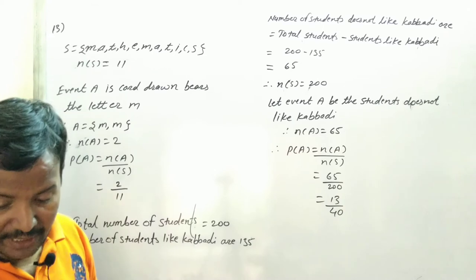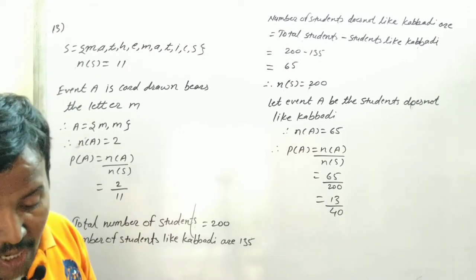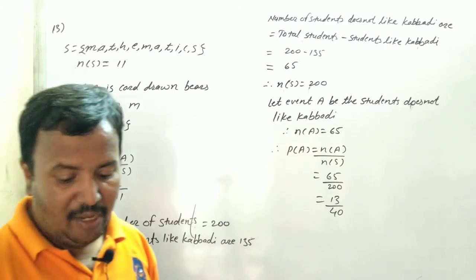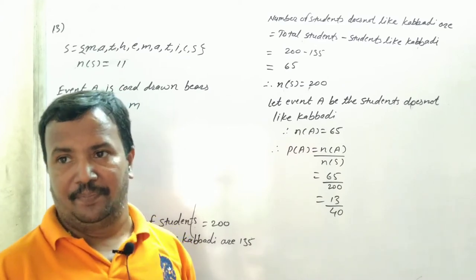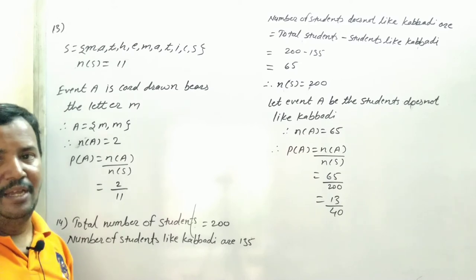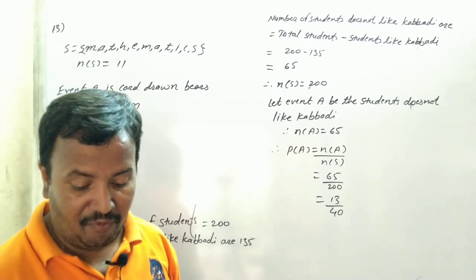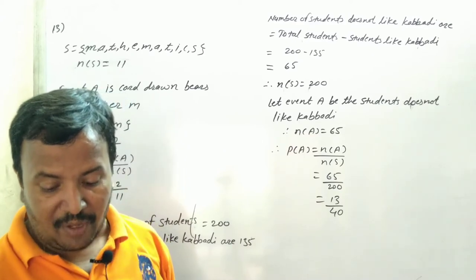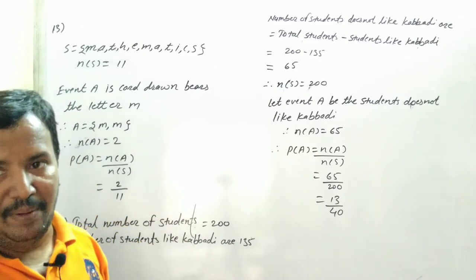Sub number 14. Out of 200 students, how many children? 200 children, 135 like kabaddi and the remaining students do not like the game. 135 students like kabaddi and the rest don't like this game. If one student is selected at random from all the students, find the probability that the student selected does not like kabaddi.